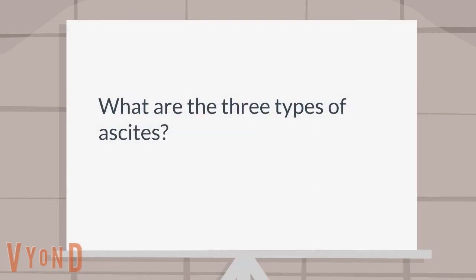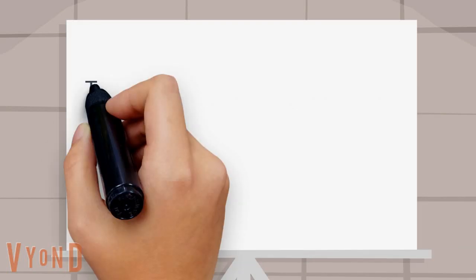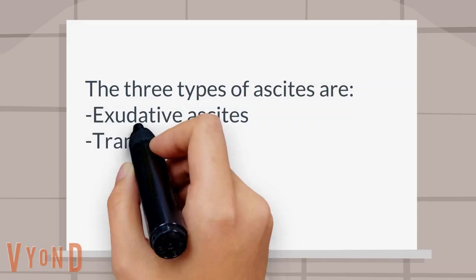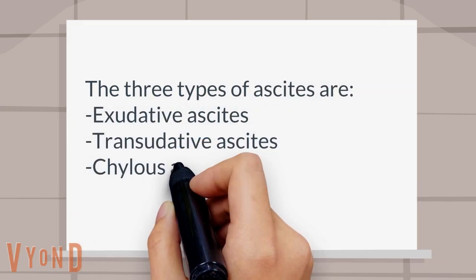What are the three types of ascites? The three types of ascites are exudative ascites, transudative ascites, and chylus ascites.